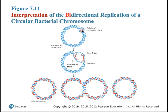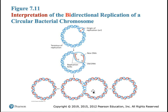In bacteria, the origin is at 12 o'clock, a replication bubble forms early, then enlarges as the replication forks travel in opposite directions. Eventually the two replication forks meet at the bottom, resulting in two copies of the original parental DNA. After resolving — separating the two rings of DNA — you end up with one chromosome going one way and the other going the other way, then the cell divides down the middle.